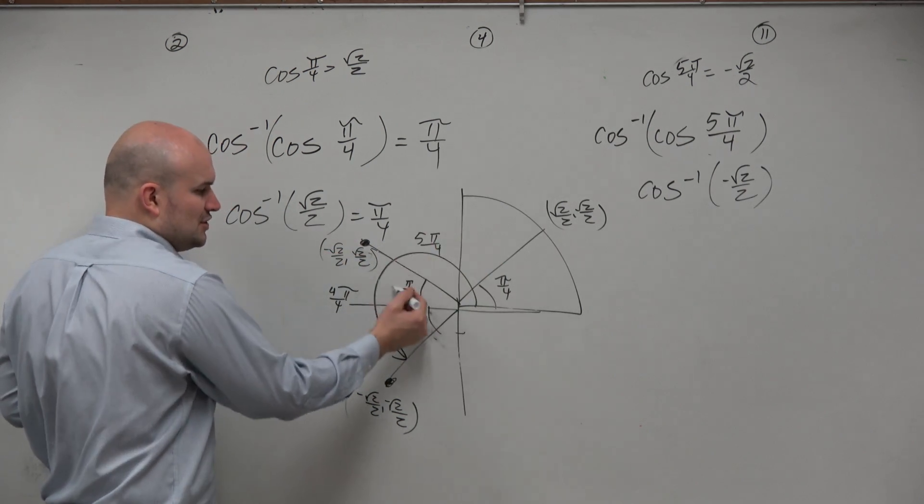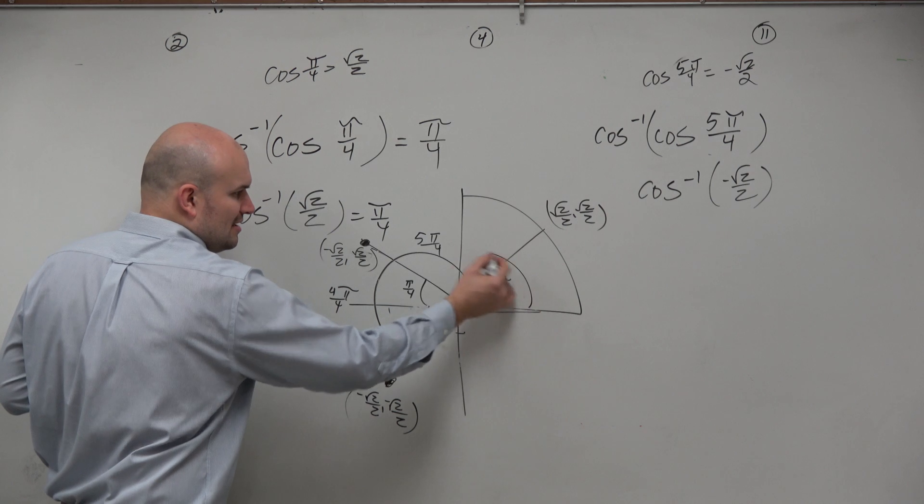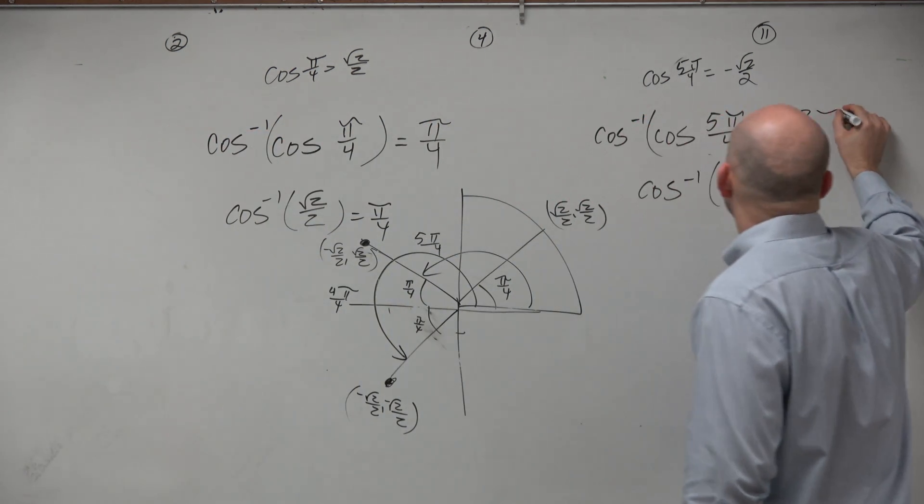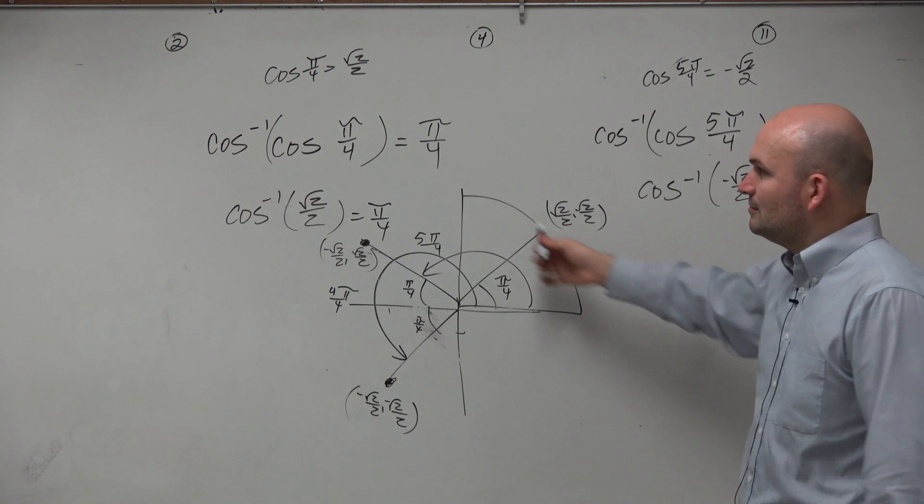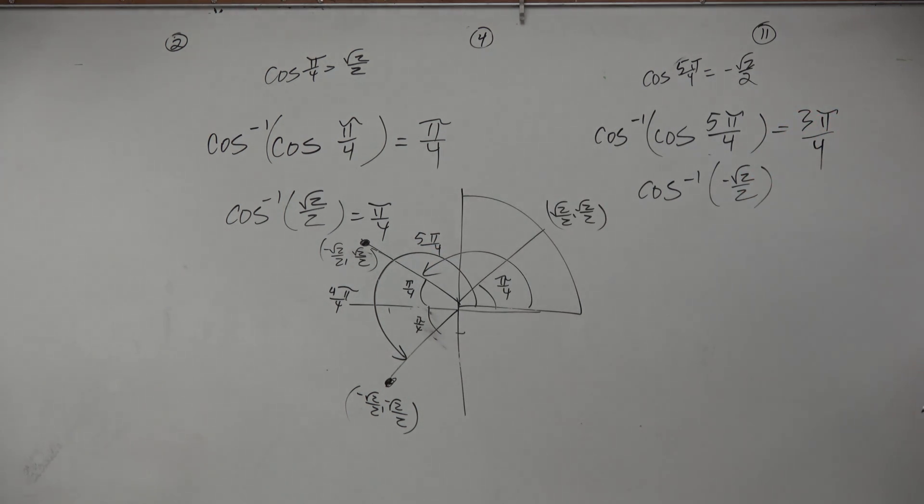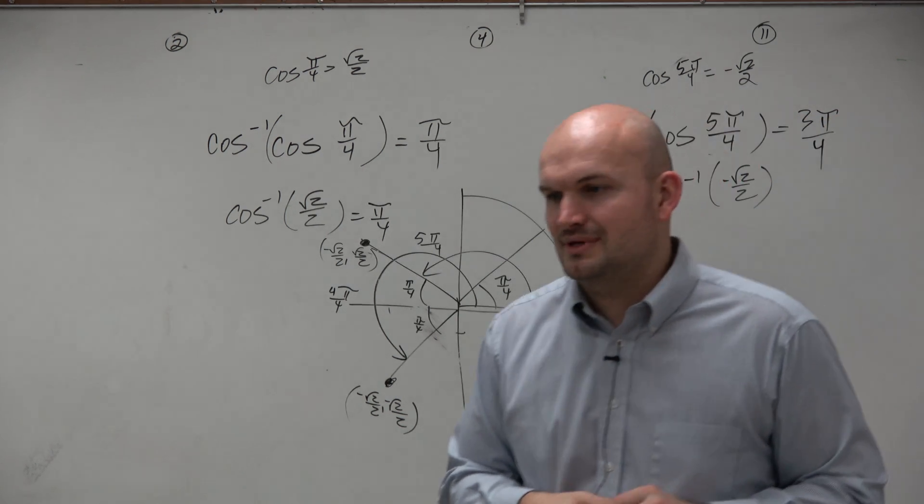So that means it has to be this angle. So if halfway around the circle is 4 pi over 4, and we're pi over 4 short, that means we're at 3 pi over 4. So that was easy and nice, but it's not always the case.